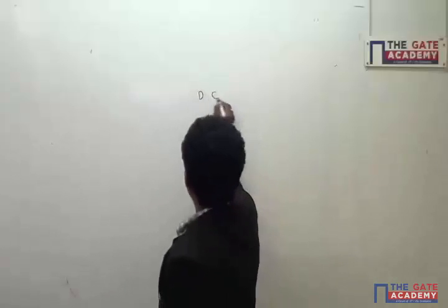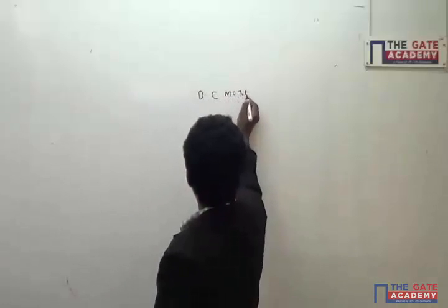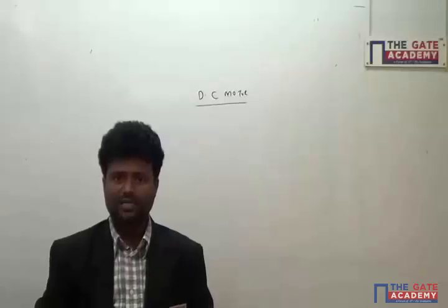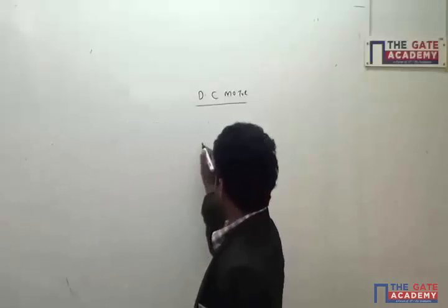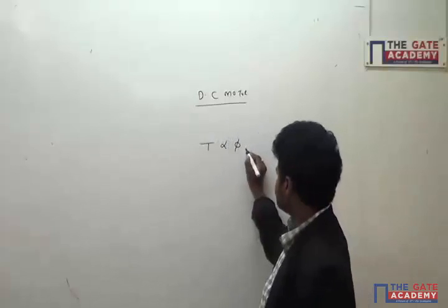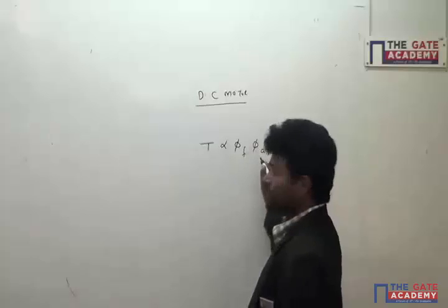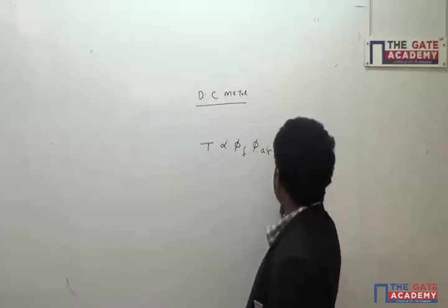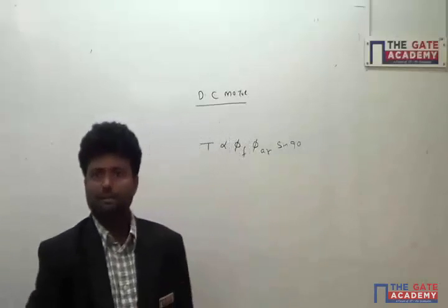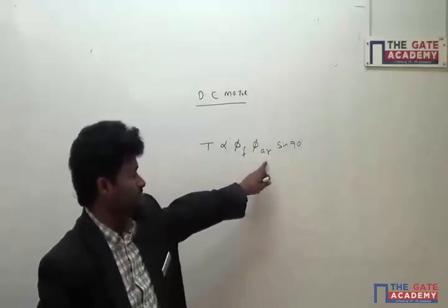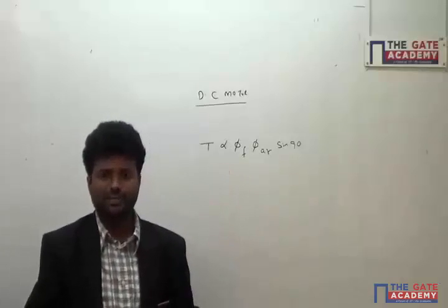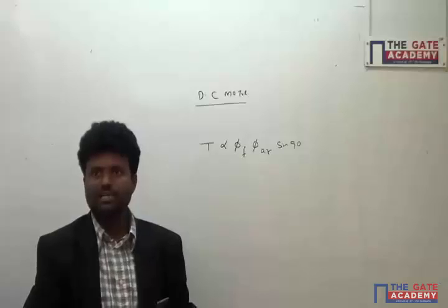The principle of a DC motor is that a current-carrying conductor placed in a magnetic field produces a torque. The amount of torque depends upon the product of field flux and armature flux. The sine of angle between these two is always 90 degrees in a DC machine, which is taken care of by the commutator. We want to derive the actual equation for the torque being exerted on the armature rotor.